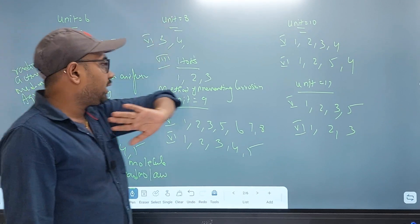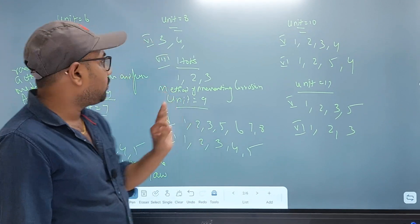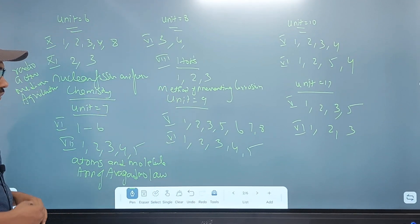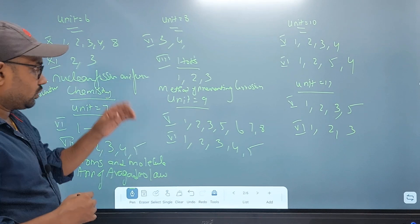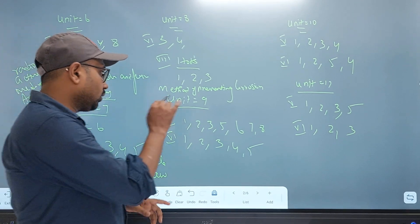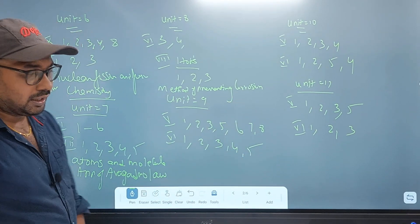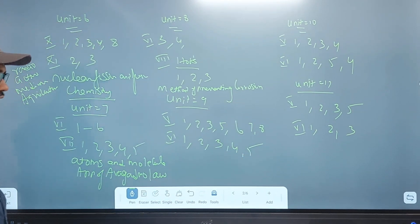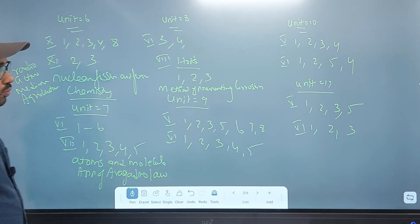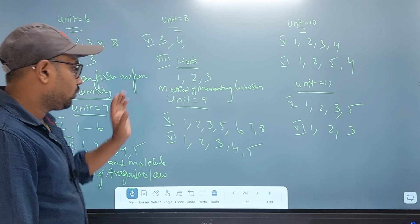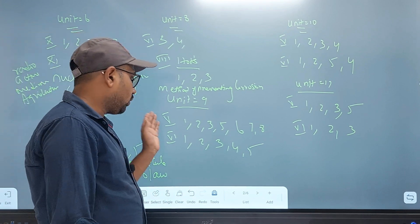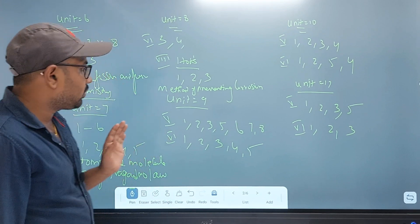Unit 8, Roman number 6: 3, 4. Roman number 8, arts question — important: 1, 2, 3 — method of preventing corrosion. The difference between atoms and molecules. Unit 9, Roman number 5, Roman number 6. It's easy to get.